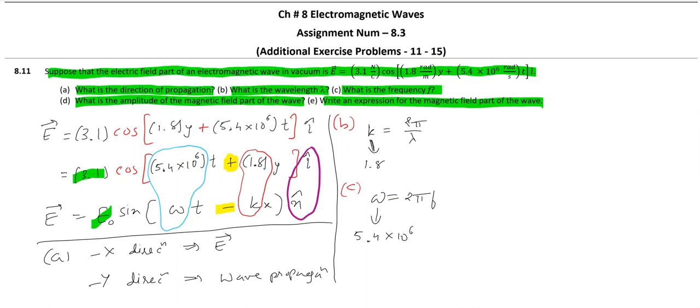What is the value of magnitude of magnetic fields? So, again, the standard relation between E₀ and B₀ we can use. Do we have E₀? Yes, E₀ is also available. It is 3.1. So, that much is clear.